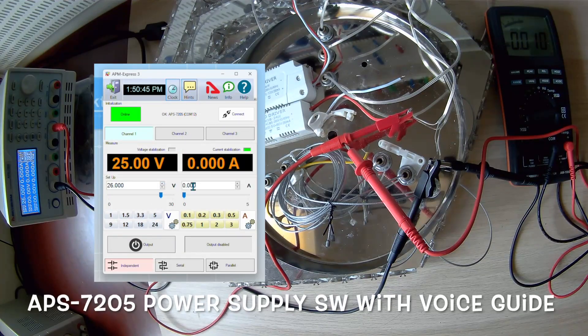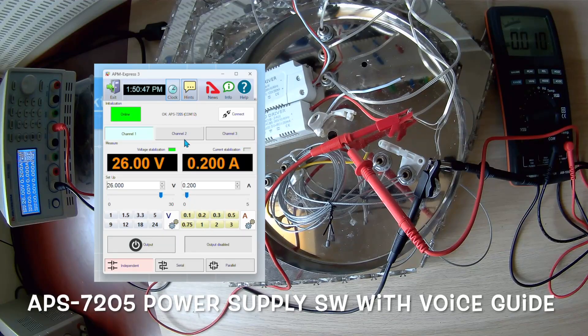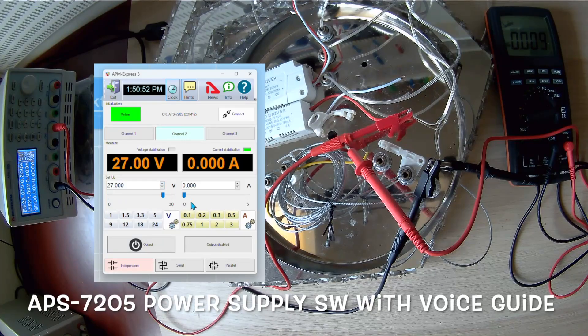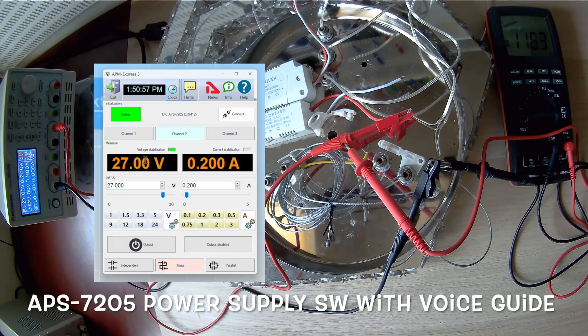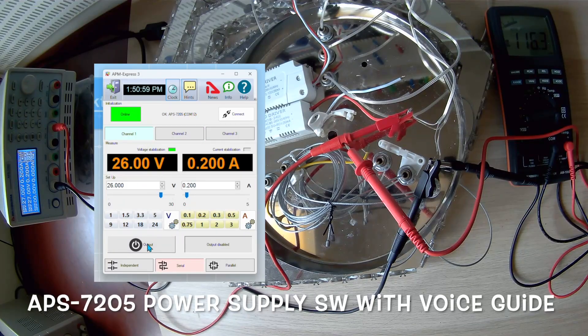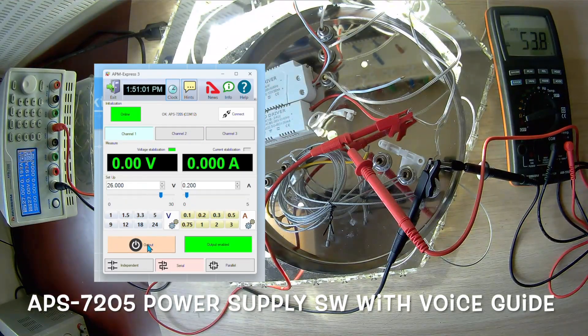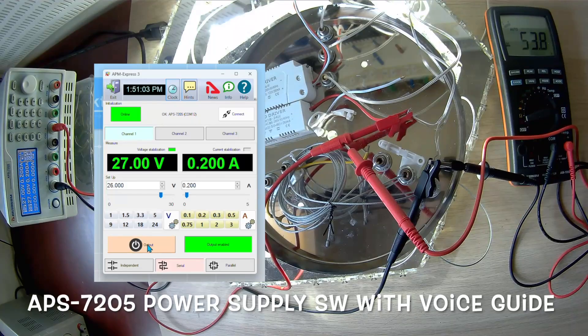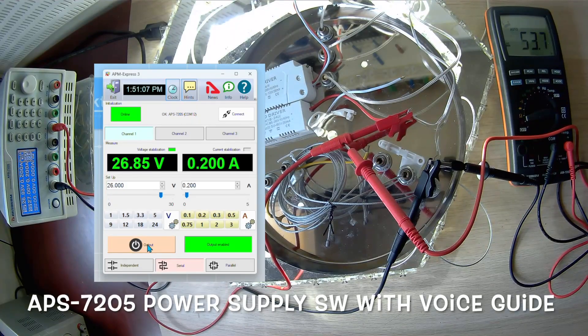To make our testing easier, we enable the remote control program via USB. We set 26V on one channel and 27V on the other and connect them in series. Total 53V. The total current is set at 200mA and now we turn on the APS7205 output.